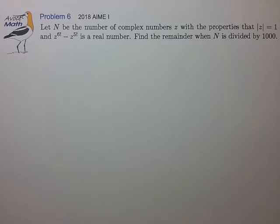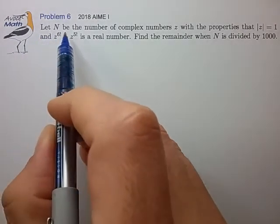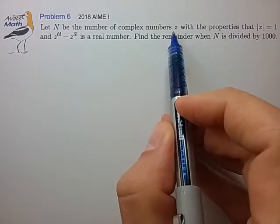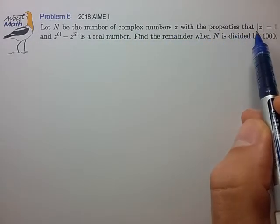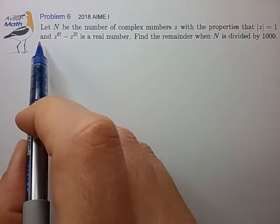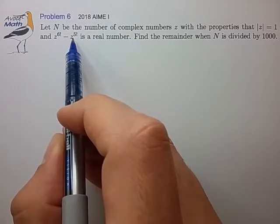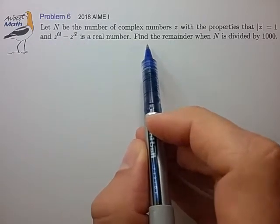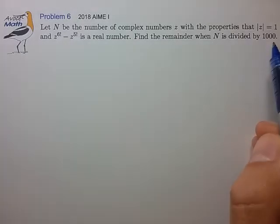Hi, this is problem 6 from the 2018 AME 1. Let N be the number of complex numbers z with the property such that |z| = 1 and z^(6!) - z^(5!) is a real number. Find the remainder when N is divided by 1000.